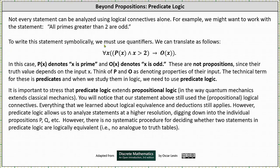To write this statement symbolically, we must use quantifiers. If we let P(x) denote x is a prime and O(x) denote x is odd, we can translate as follows: for every x, if P(x) and x is greater than two, then O(x).